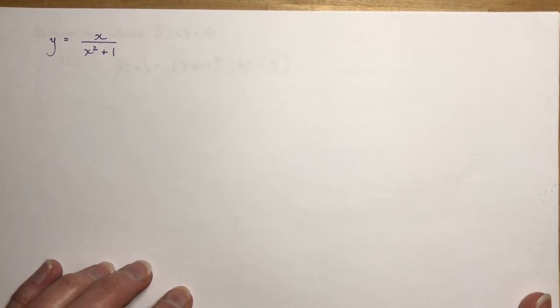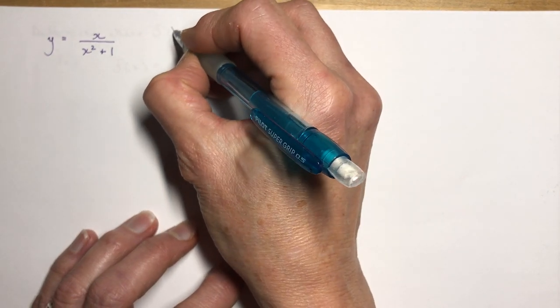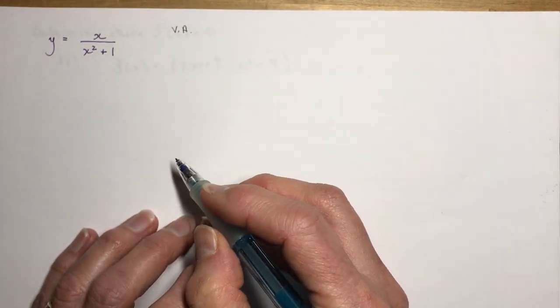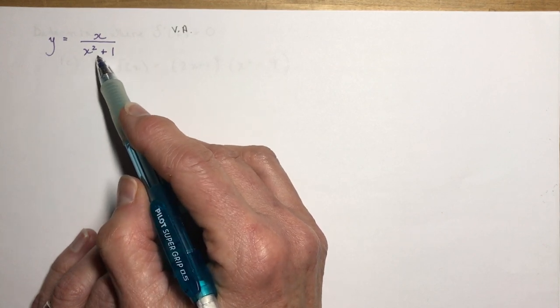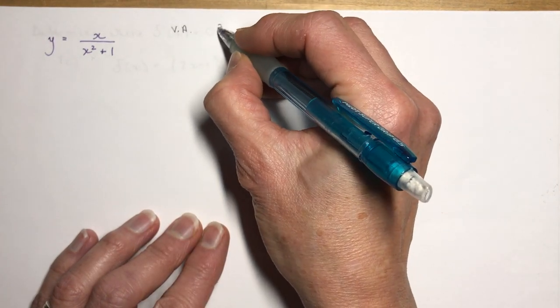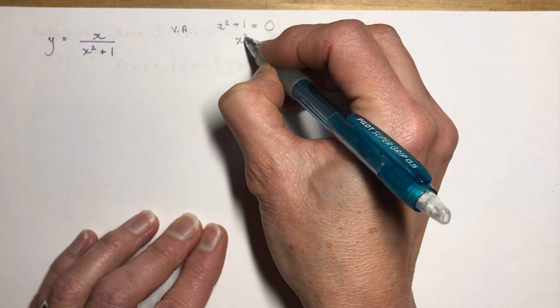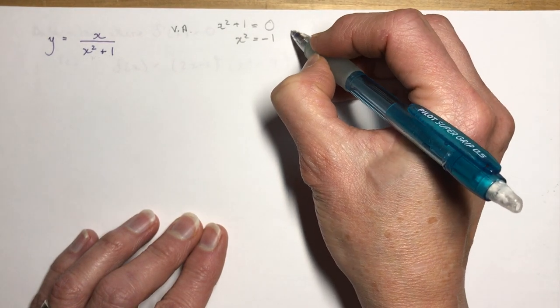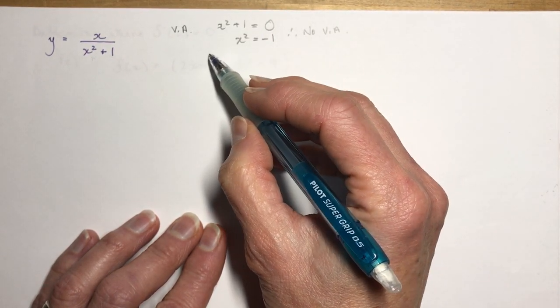The next example: graph f(x) = x/(x² + 1). For a vertical asymptote we need values that make the denominator zero. Setting x² + 1 = 0 gives x² = -1, which has no real solution — you can't square a number and get a negative. So there are no vertical asymptotes.